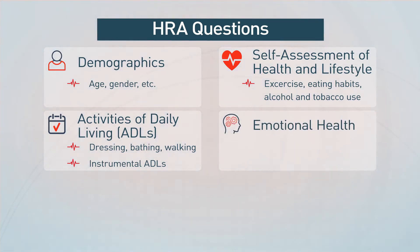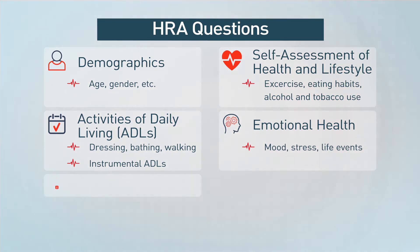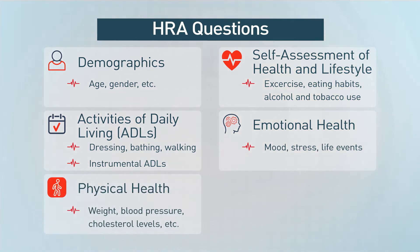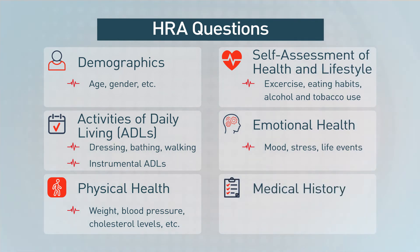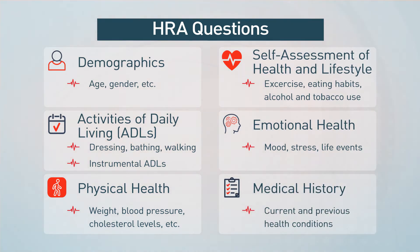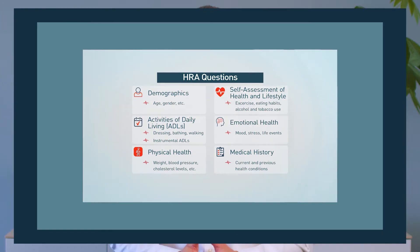The HRA should also cover emotional health including mood, stress, and life events; physical health including weight, blood pressure, and cholesterol levels; and medical history including current and previous health conditions.